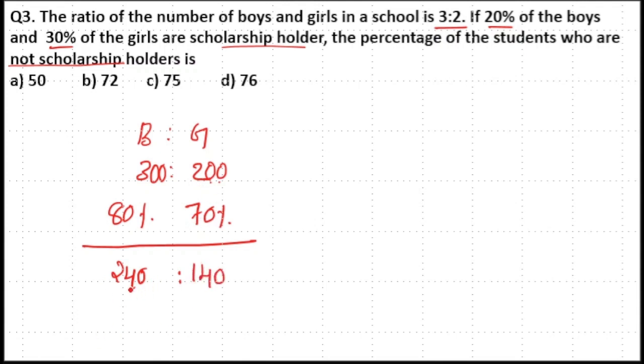Here 240 and 140 respectively are the number of students who are not scholarship holders in boys and girls. So total number of students who are not scholarship holders are 240 plus 140, that is 380 out of 300 plus 200, that is 500.